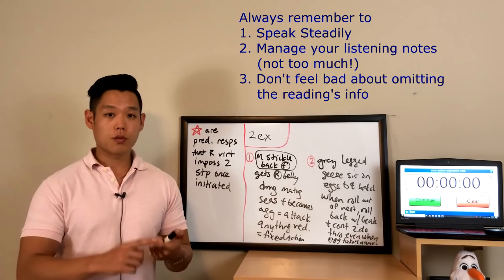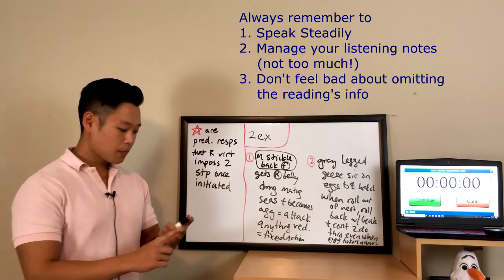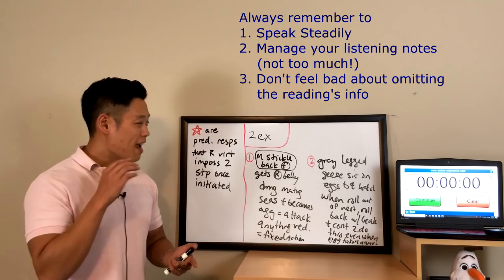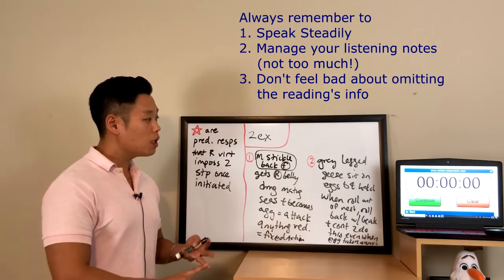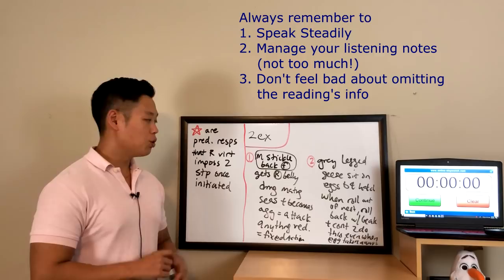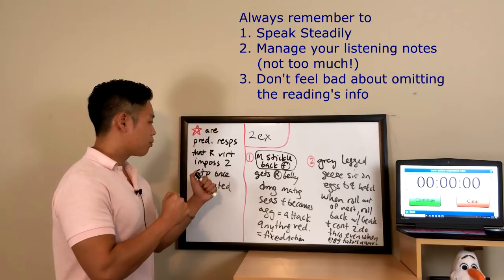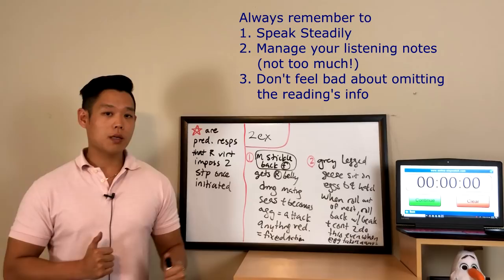Number two: this is more than enough information — I would never expect you to take notes on more information than this on a regular basis, since it's unreasonable. Number three: one minute is just enough time to do everything I want you to do. So prioritize the listening information and your fluency — your speaking pace — and don't feel bad about sacrificing the reading's information for Task 3 and Task 4 questions.